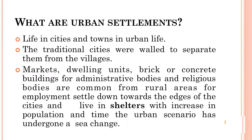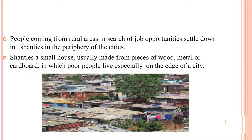Life in cities and towns is urban life. The traditional cities were built to separate them from the villages; markets, dwelling units, brick or concrete buildings for administrative bodies and religious bodies are common features distinct from rural areas. People coming from rural areas in search of employment settled down towards the edges of the cities. With increase in population over time, the urban scenario has undergone a sea change. People from rural areas in search of job opportunities settle down in shanties in the periphery of cities. Shanties are small houses usually made from pieces of wood, metal or cardboard in which poor people live, especially on the edges of the city.